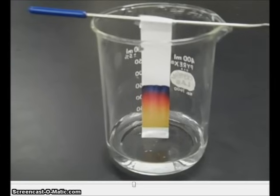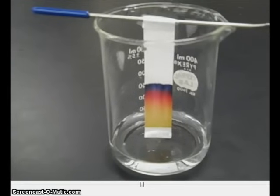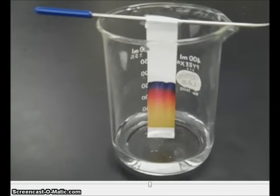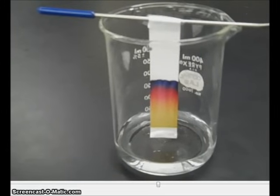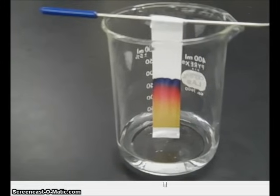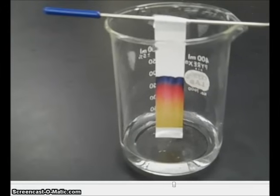This is because the different pigments have different properties. Some of them are heavier, some are lighter, some are more soluble in water, some are less. Because of these differing properties, all of the different colors are going to travel at different speeds.